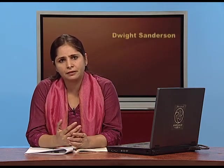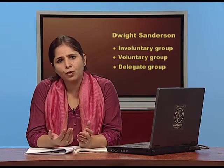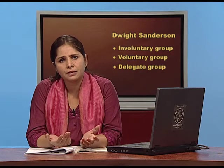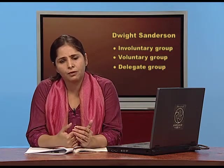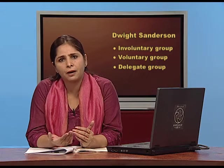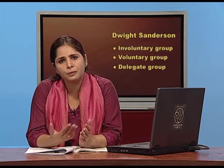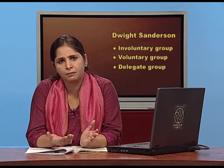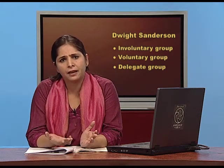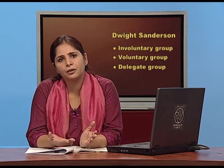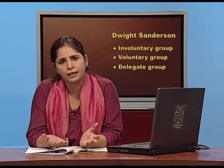Dwight Sanderson said there are three types of groups: involuntary, voluntary, and delegate groups. An involuntary group is based on blood relationships. A voluntary group is one we join on our own will. A delegate group is when we are representing certain people, elected by a group, and become part of that group as a representative — that becomes a delegate group.